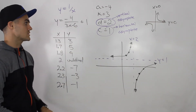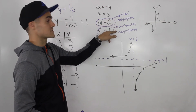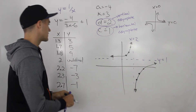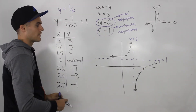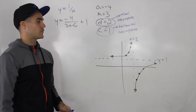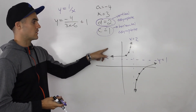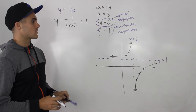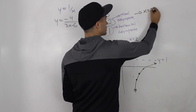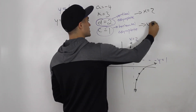Whenever you're dealing with reciprocal functions and graphing them, I'd highly recommend drawing the vertical and horizontal asymptotes first — those are simply the d and c values — then take your points, plot them, and you can see more clearly how the shape of the graph looks. Now, the question asks for the equations of the asymptotes. The vertical asymptote is x = 2 and the horizontal asymptote is y = 1.